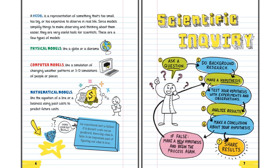Scientific inquiry: 1. Ask a question. 2. Do background research. 3. Make a hypothesis. 4. Test your hypothesis with experiments and observations. 5. Analyze results. 6. Make a conclusion about your hypothesis. 7. Share your results. If it's false, make a new hypothesis and begin the process again.